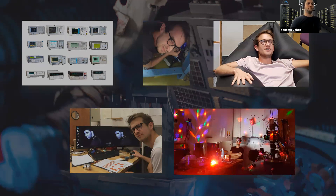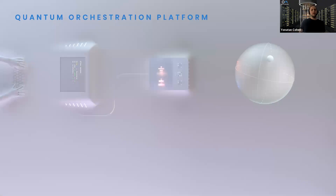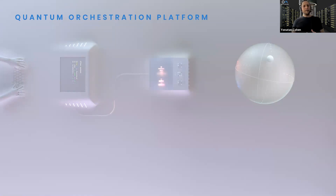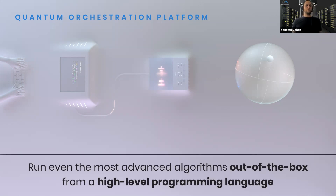That's why we started Quantum Machines and developed the Quantum Orchestration Platform. This platform is a fully integrated hardware and software system — highly modular and scalable — that allows you to run even the most complex quantum experiments pretty much out of the box, in a very intuitive programming language that we call QUA.